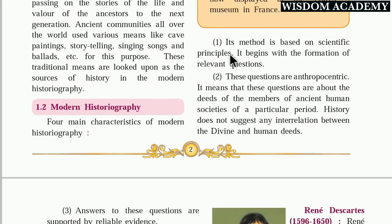We are using scientific principles. It begins with formation of relevant questions. If I want to prove something or tell whether it is correct, I must ask questions about it. Only when I get answers to those questions can I say that the information is correct. If no answer is found, then that information will not be correct.